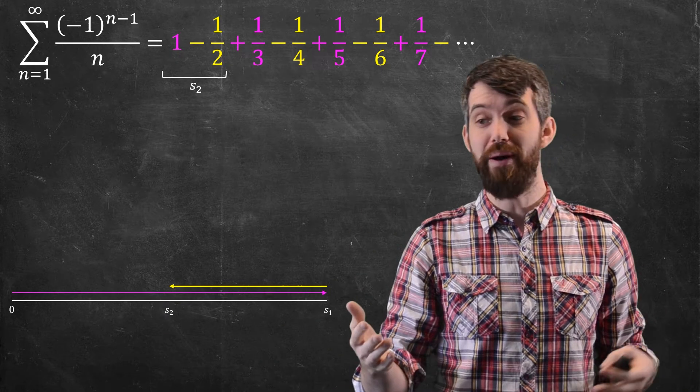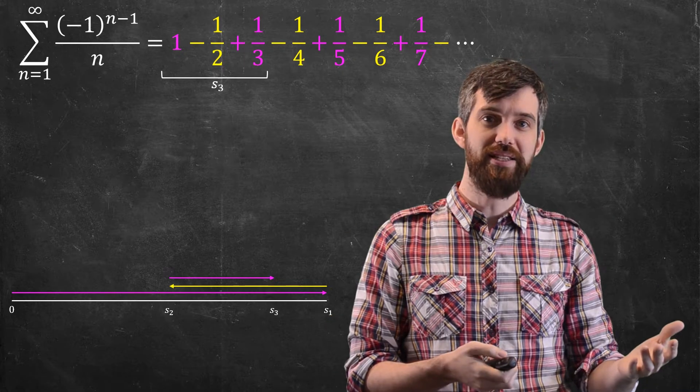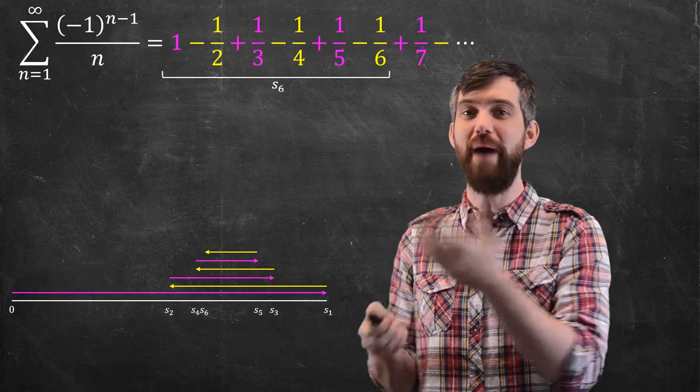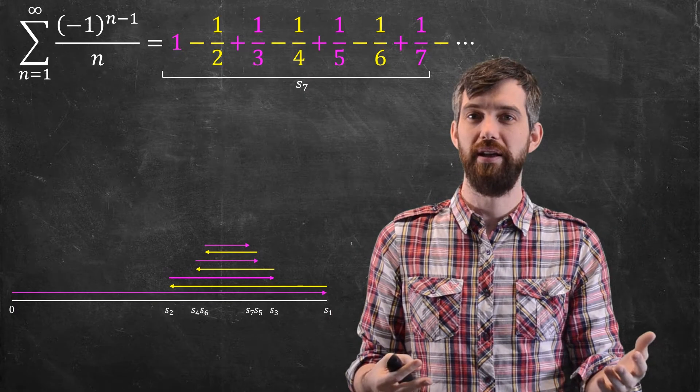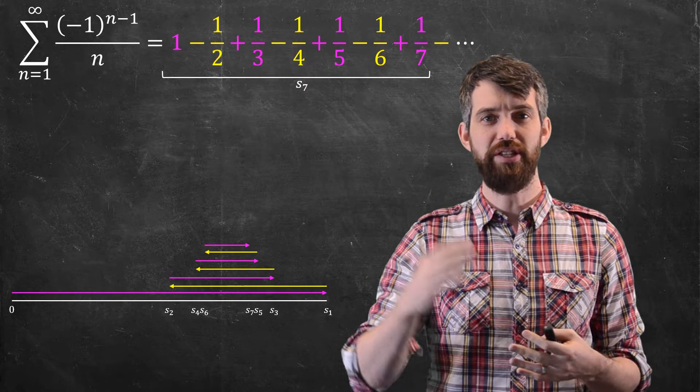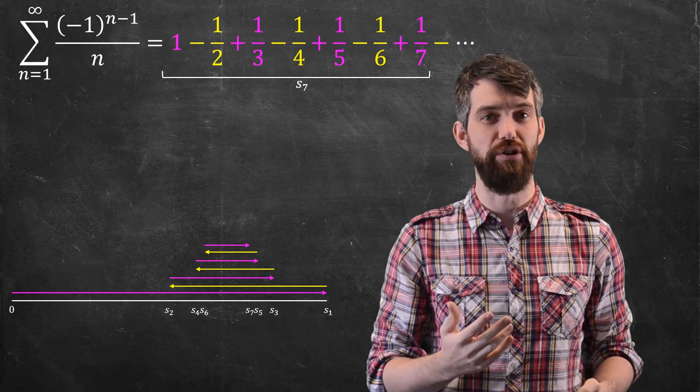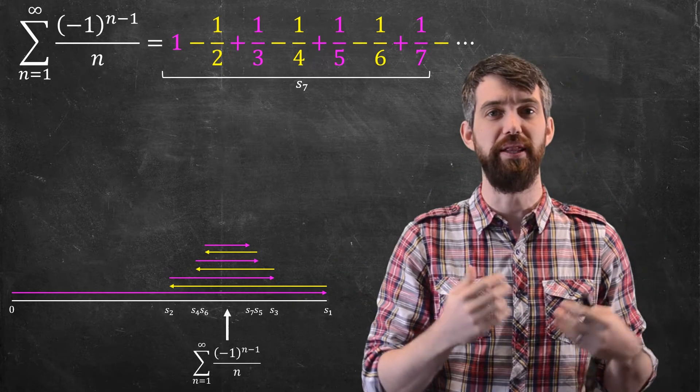Now I step out 1/3 to s₃, then backwards to s₄, advance to s₅, backwards to s₆, advance to s₇, and so on. Because of this alternating series, there's this back and forth process, and it looks like it's going to converge, with the actual value stuck somewhere in the middle.